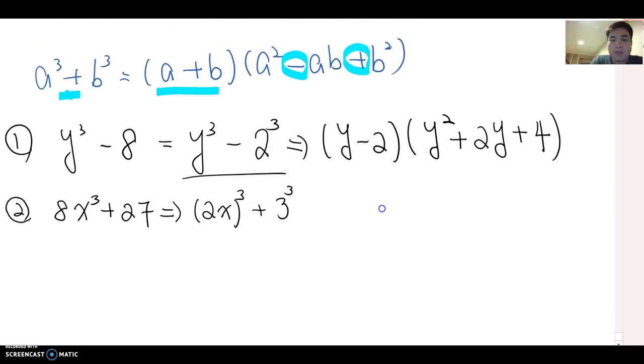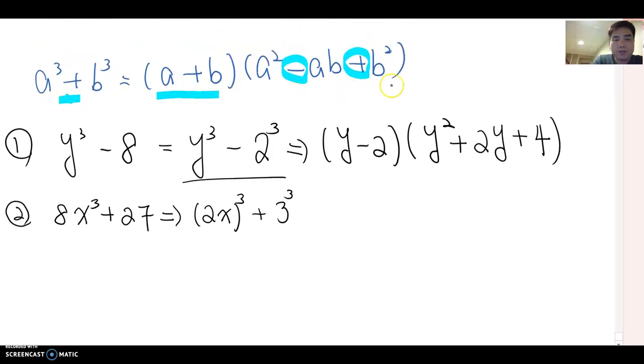Then this one we can rewrite: 2x to the cubic power plus 3 to the cubic power. Then this one looks like this form here now. Therefore, I'm going to follow that. So factoring becomes 2x plus 3. And then second term: 2x square, which is 4x square.